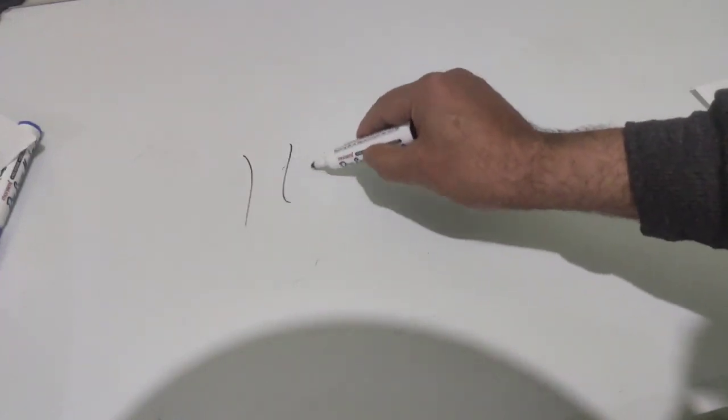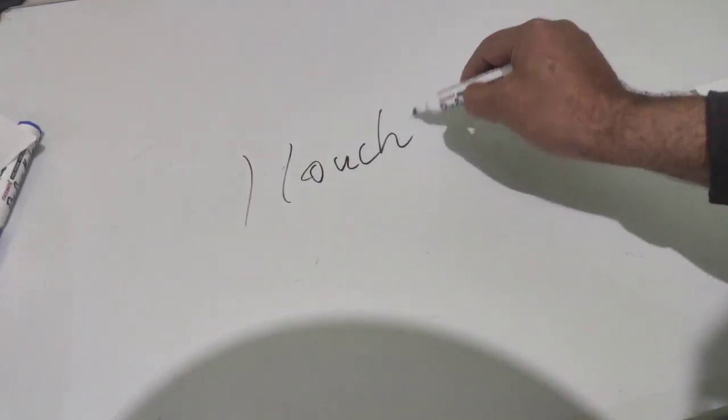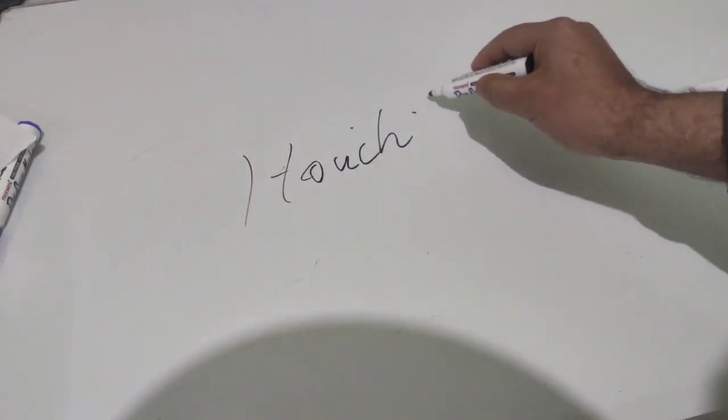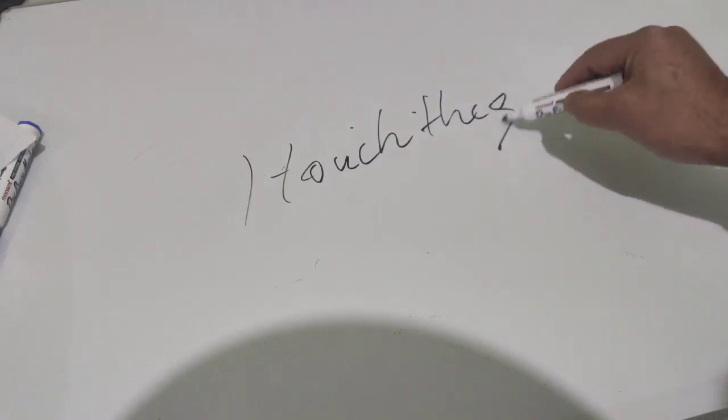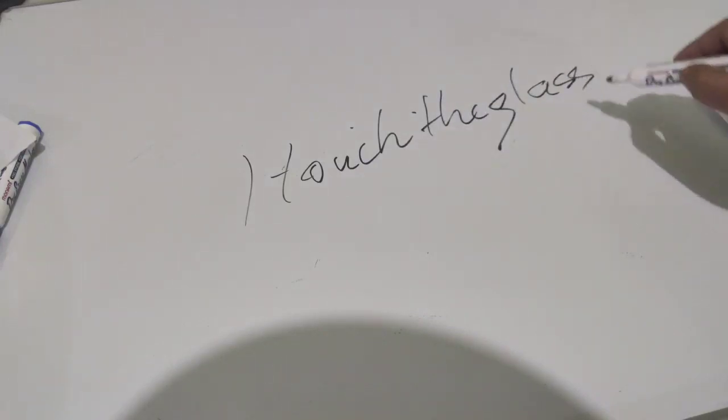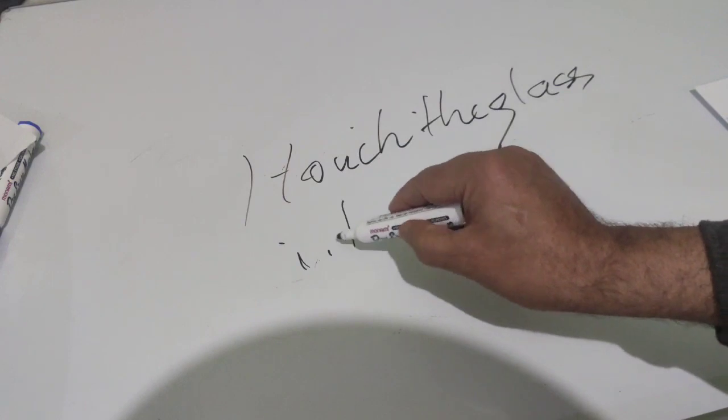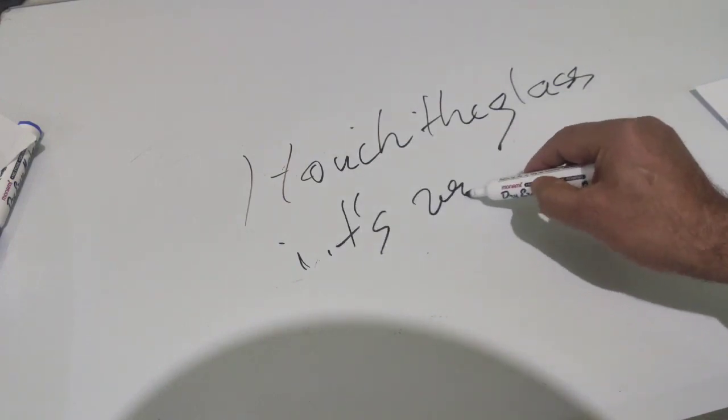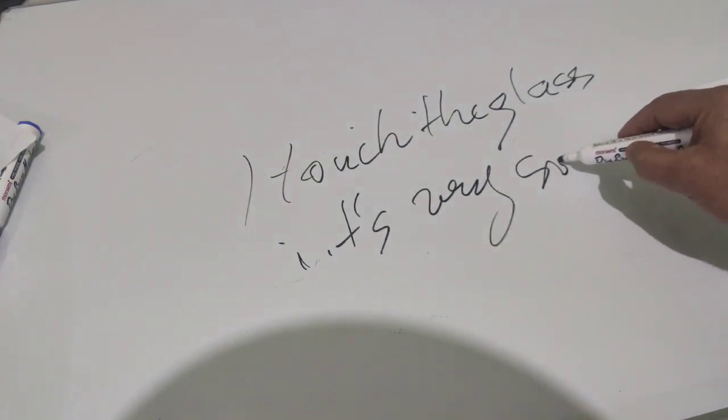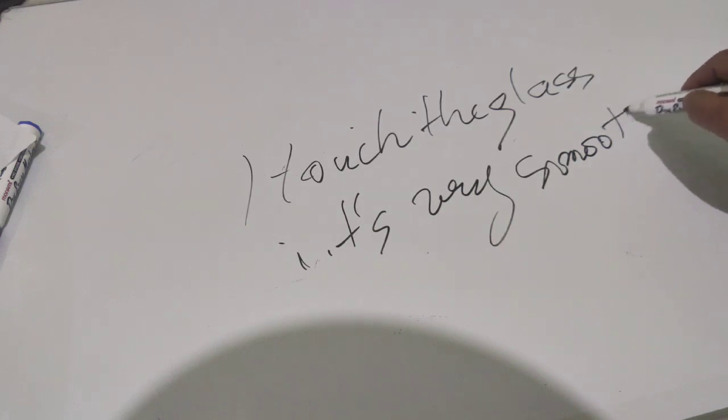Okay. For example. For example. I touch the glass. It's very smooth. I touch the glass. It's very smooth. I touch the glass, it is smooth.